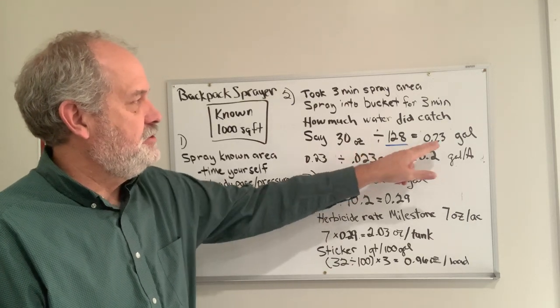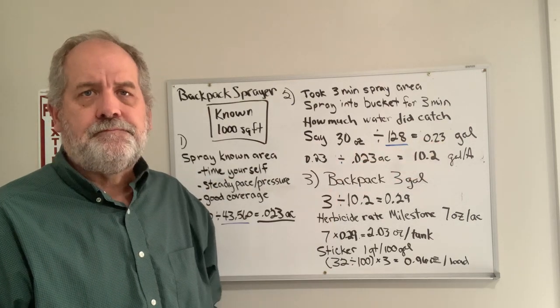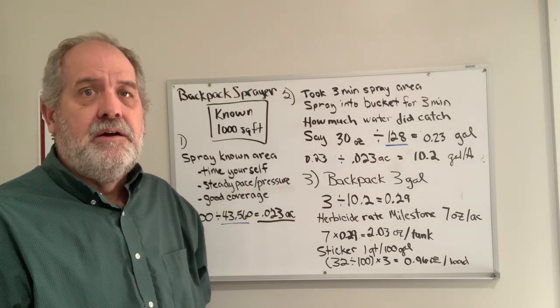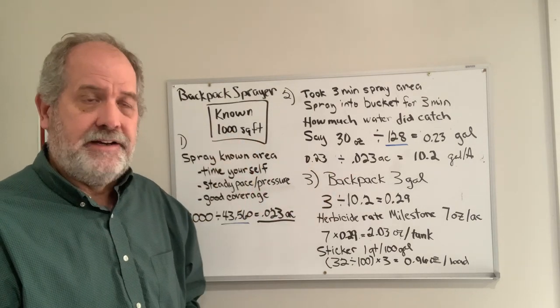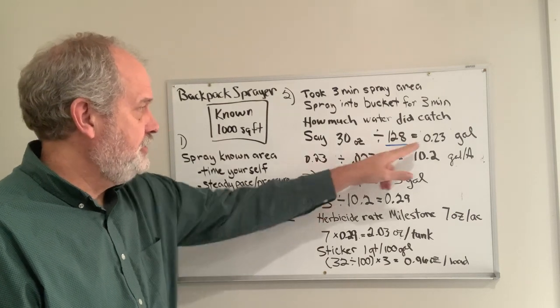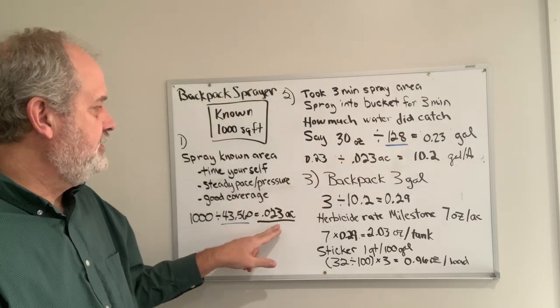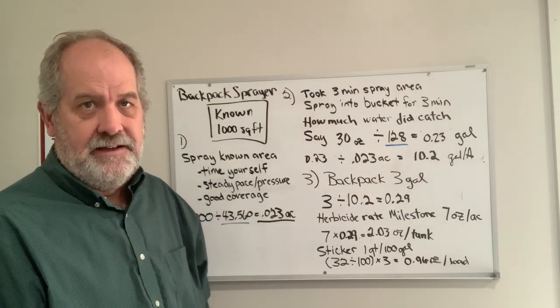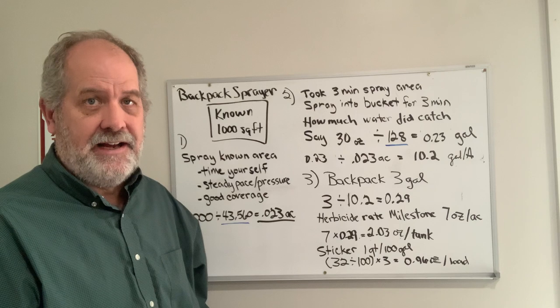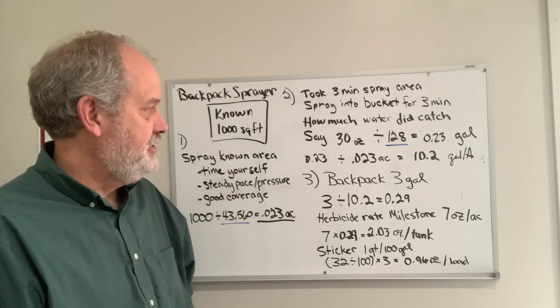You divide that by 128. You know that you applied 0.23 gallons over this known area. So 0.23 gallons divided by 0.023 acres is 10.2 gallons per acre. That's how much you apply if you were to make a regular application.